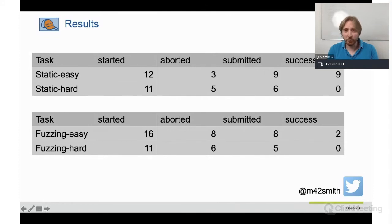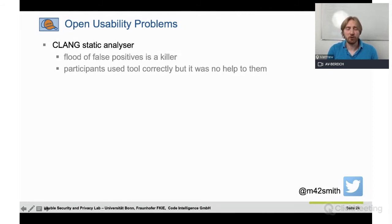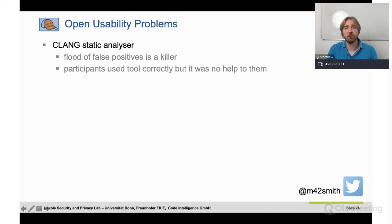The usability problems of static analysis were unsurprising and well-known in industry and academia: the flood of false positives is a killer. All students used the tool correctly — that was not the problem — but the tool was no help to them once the problem reached a realistic size. Most projects will not give you just five items in a report; you'll get hundreds. Industry experts have projects with hundreds of thousands of items in a report, requiring very well-paid specialists to wade through. Conceptually, reducing false positives without also reducing true positives is a hard problem.